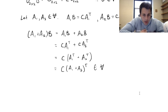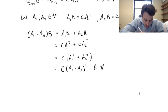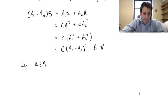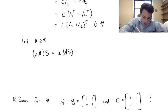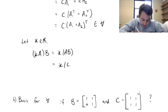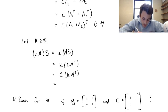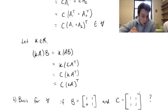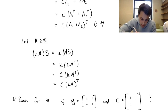Now let's multiply A by a scalar k and see if the property still holds. We have (kA)·B = k·(AB) = k·(C·A^T) = C·(k·A^T) = C·(kA)^T. This last step uses the property of transpose (note: this holds for scalars, unlike inverses). So (kA)·B = C·(kA)^T — this is in V.